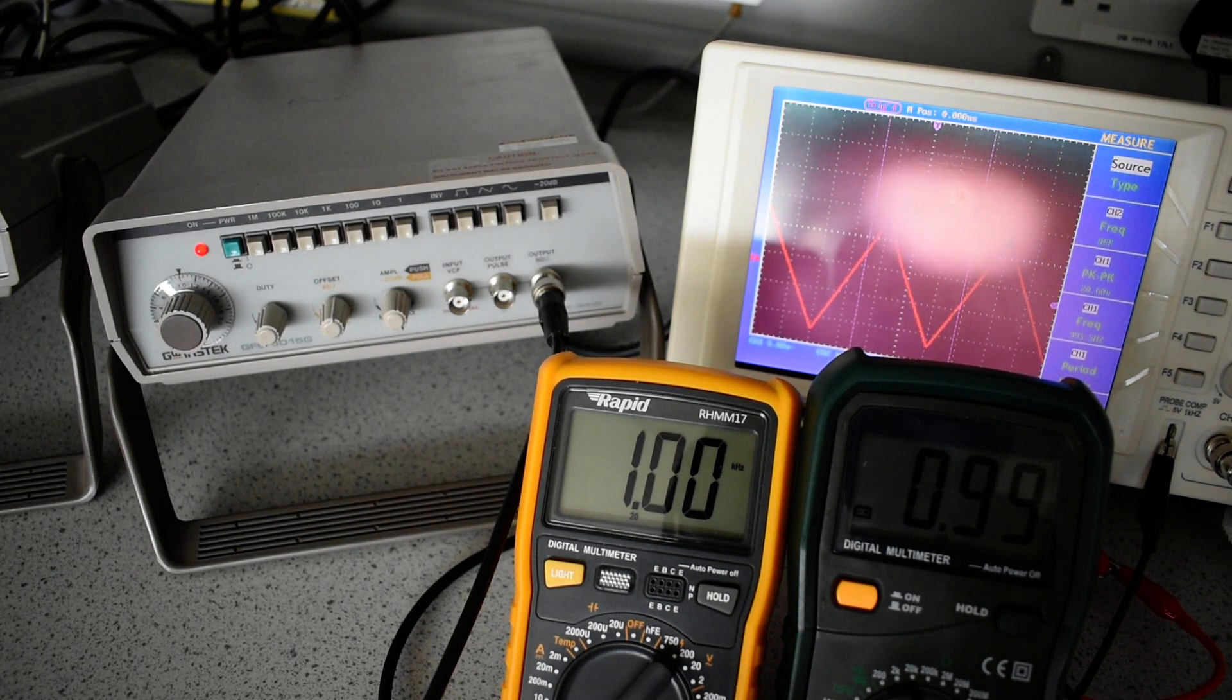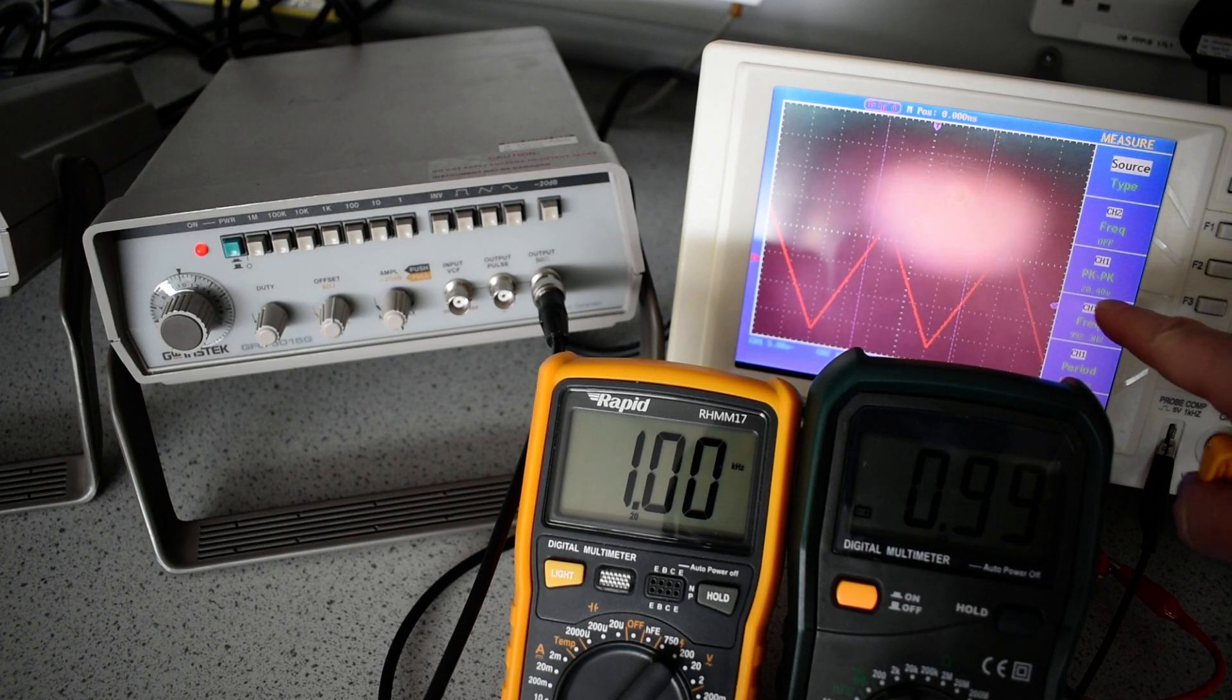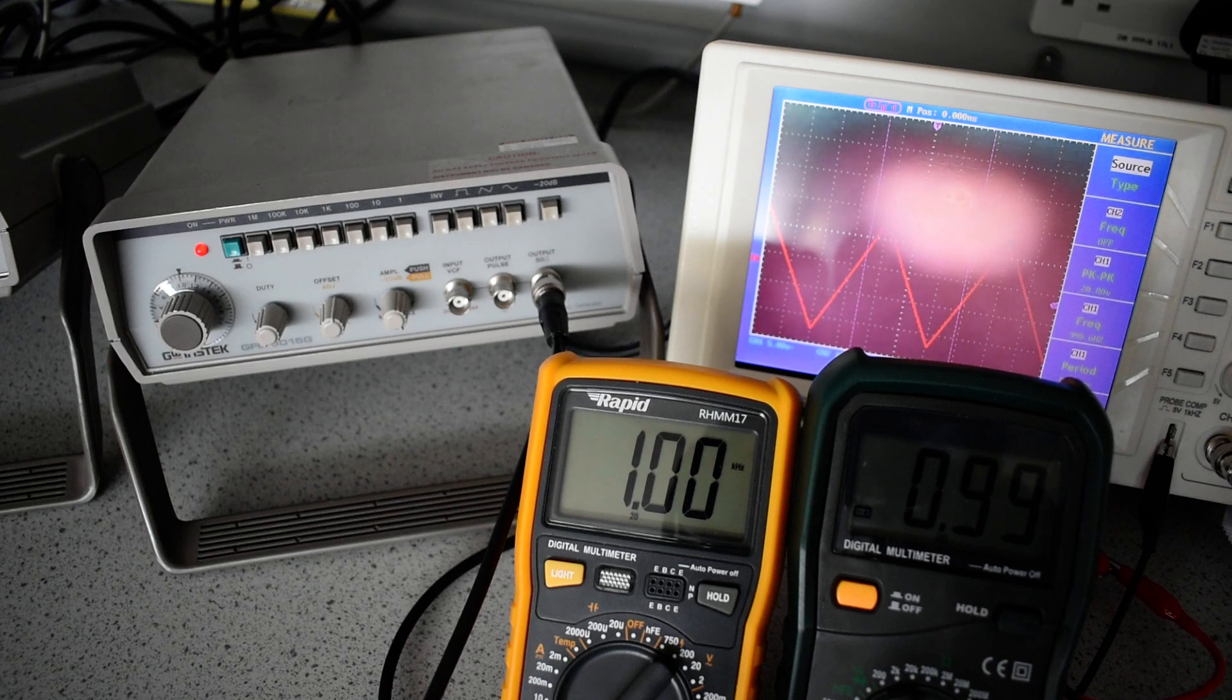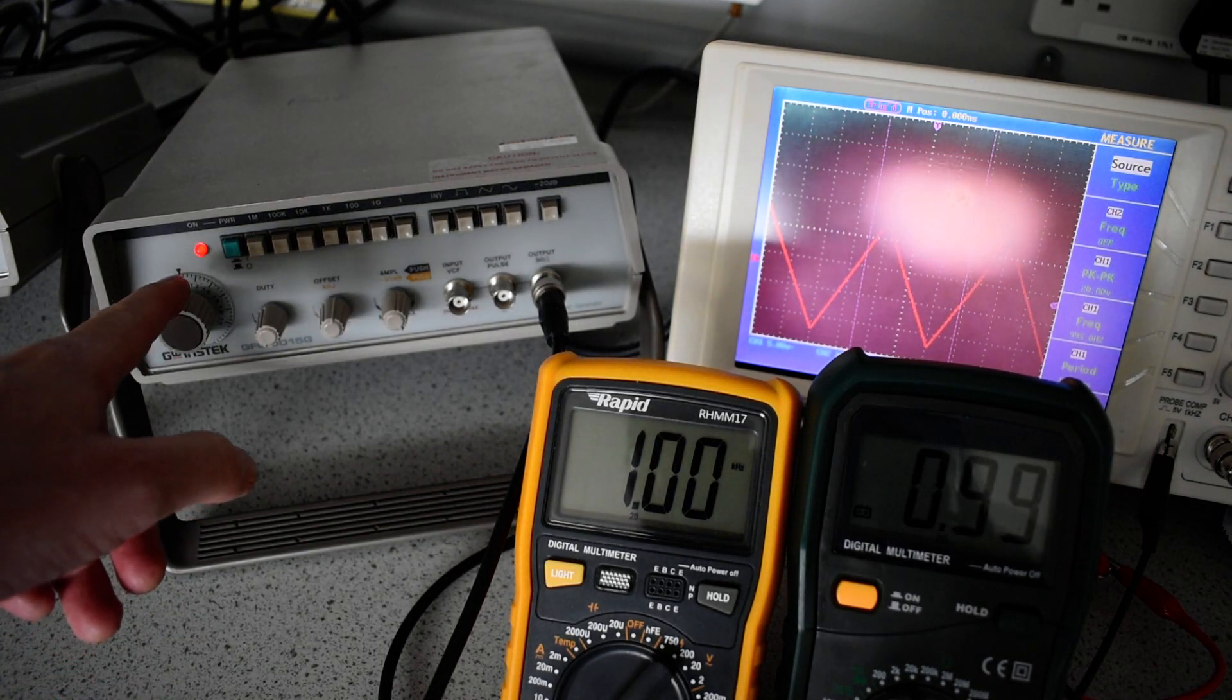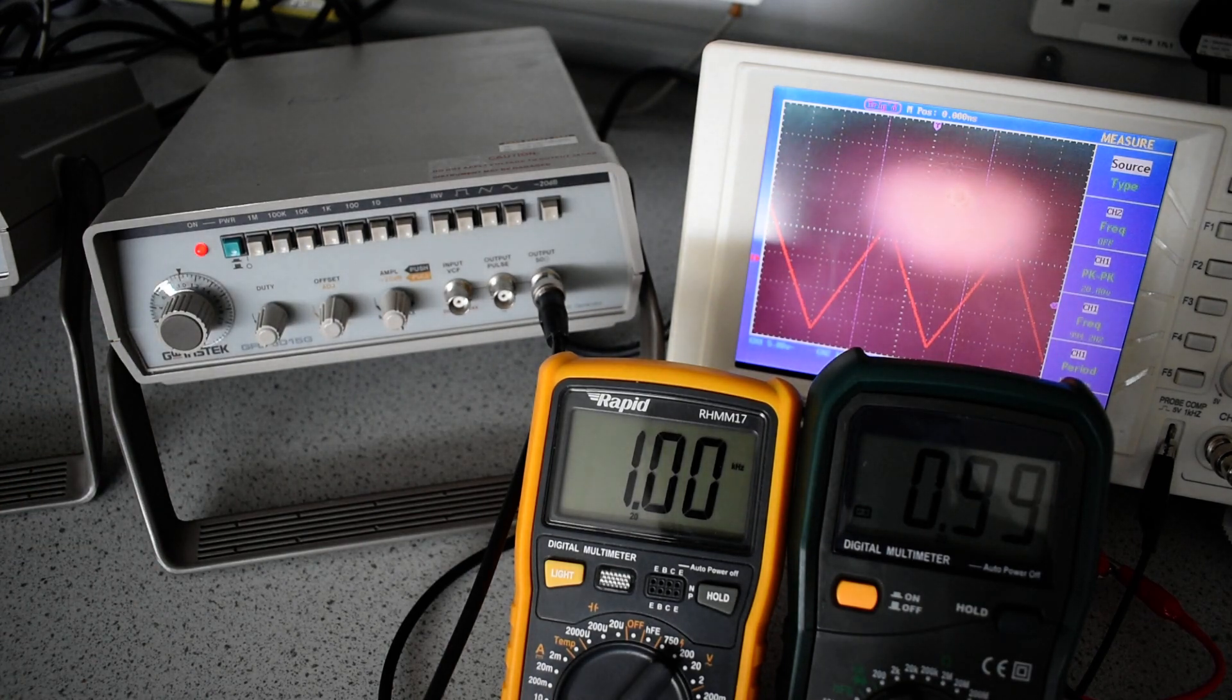It should have a peak to peak amplitude of greater than 20 volts. We're measuring 20.6, that is within spec. It should have a frequency within 5% of the dial setting, which in this case is 1000 Hz.